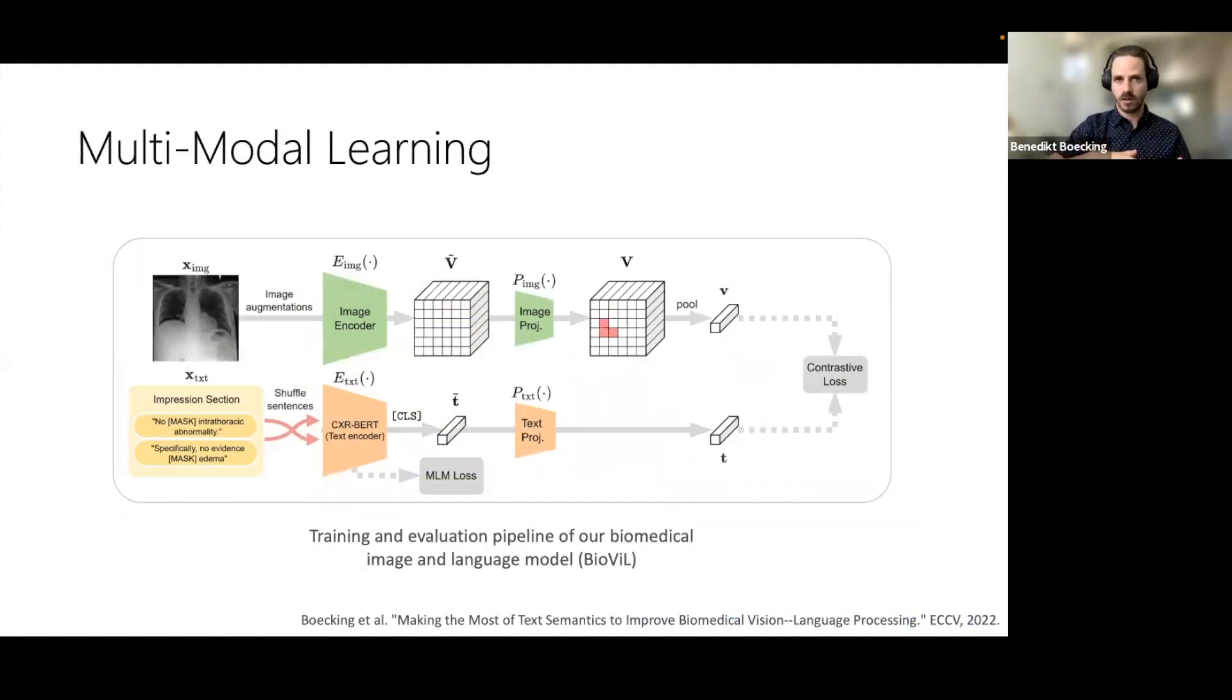For our joint training on the MIMIC-CXR dataset, we first pre-train the text and the image encoder separately, and we then perform joint contrastive learning using the global text and image representations. Importantly, we also add a masked language modeling loss to the objective to avoid shortcuts and maintain text understanding. And this framework can easily be extended to use local contrastive losses, such as patch-to-token matching, which is something that we explored in our work.